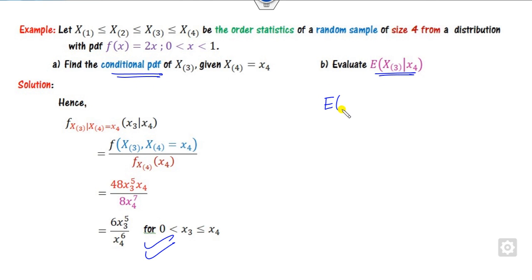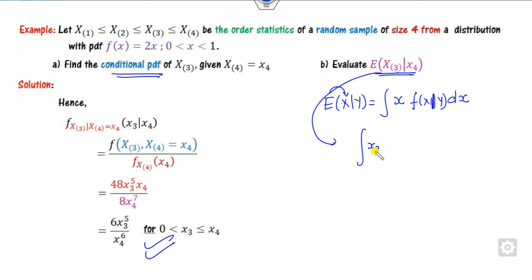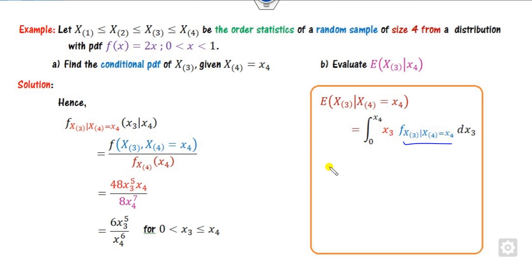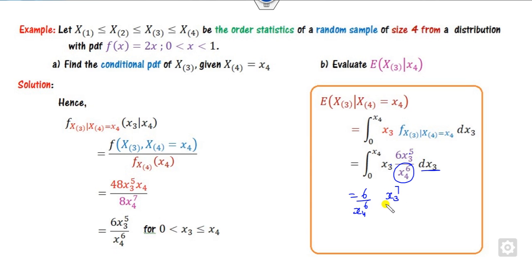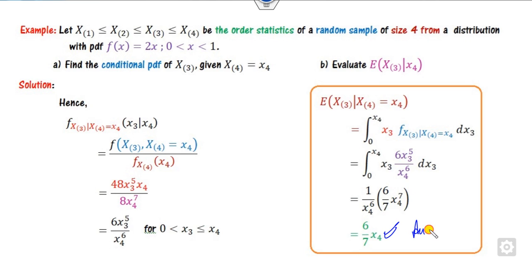To find the expected value, we use the conditional probability. We multiply x3 by the conditional PDF of x3 given x4 and integrate from 0 to x4. Substituting the conditional PDF we already computed, with 6 outside the integral, we integrate x3 raised to the power 6, giving an exponent of 7 after integration. The final answer is (6/7)x4. Since x4 is already known, the result is expressed in terms of x4.